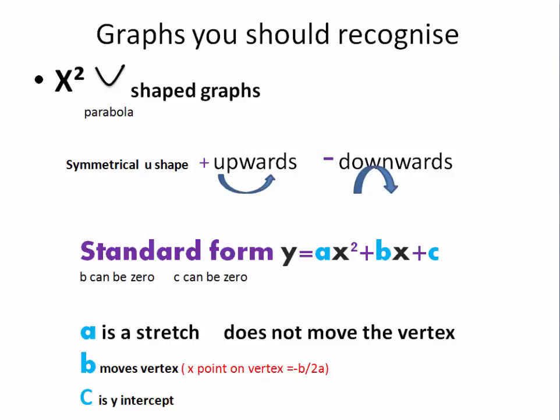These graphs are called parabolas and the standard form always has an x squared as the highest power of the variable x. The standard form is, they're a symmetrical shape and if they're positive, the shape which is a u shape, not a v shape, a u shape is upwards. And if they're negative, if there's a negative before the x squared term, then it's a downwards u. The standard form is y equals ax squared plus bx plus c. The b can be 0 and the c can be 0 but a can't be 0.